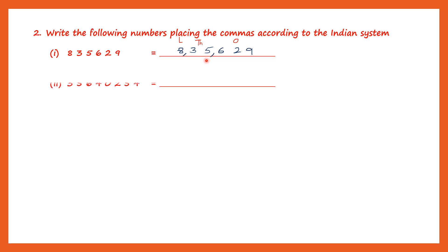So here again we have all these numbers. Let's rewrite: three, five, six, four, zero, two, five, four. Ones, tens, hundreds — put a comma. Thousands, ten thousands — comma. Lakh, ten lakh — comma. And then we have crore. So ones, tens, hundreds is the ones period; thousands and ten thousands is the thousands period; lakh and ten lakh is the lakhs period; and this is the crore's period. After every period there is a comma.